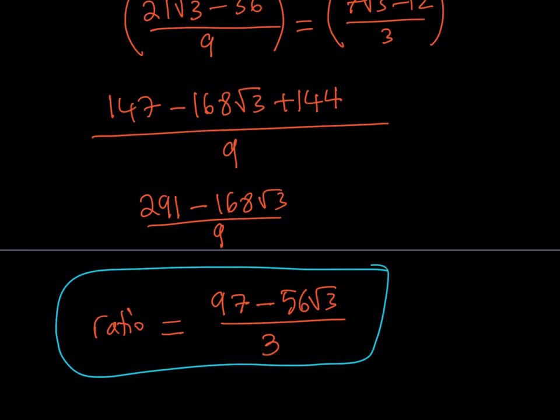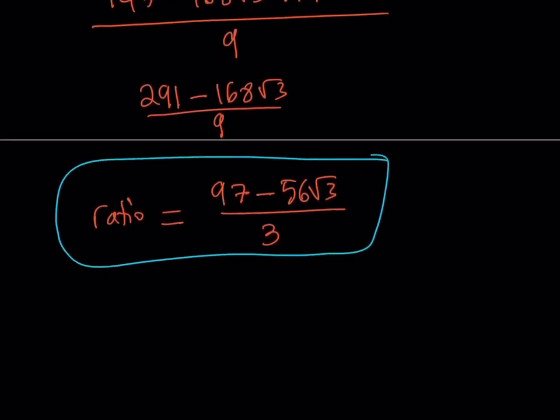And if you're wondering what that ratio is going to look like, that's actually a very, very small number. It looks like a large numerator, but the fact is that the square root of 3 is about 1.7. When you multiply that by 56, you're going to get a number that's really close to 97. So the difference will be very small. And if you're wondering what that's going to look like, it's approximately 0.0017.